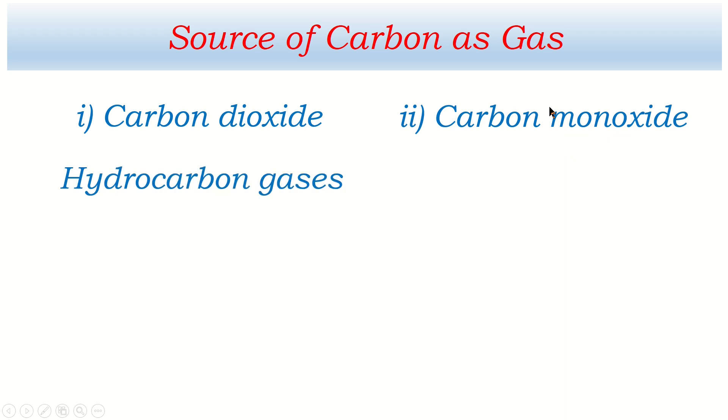In the same way hydrocarbon gases are there. They are also the source of carbon. What are they? Number one, methane. Hydrocarbon gases, one of the major gas is methane. Its formula is CH4. And hydrocarbon gas another is ethane. Its formula is C2H6.